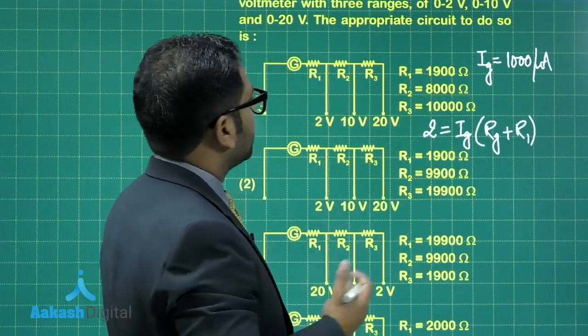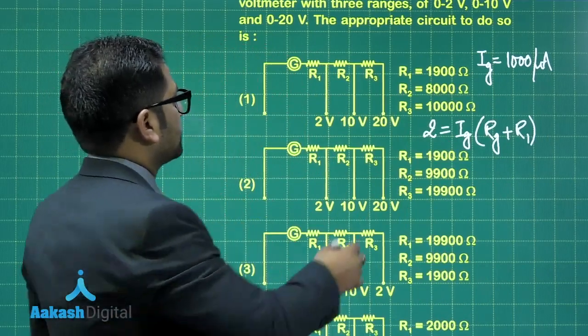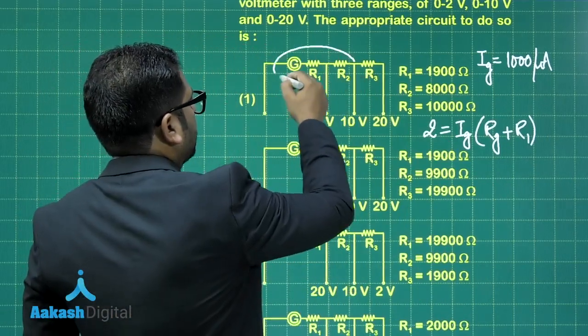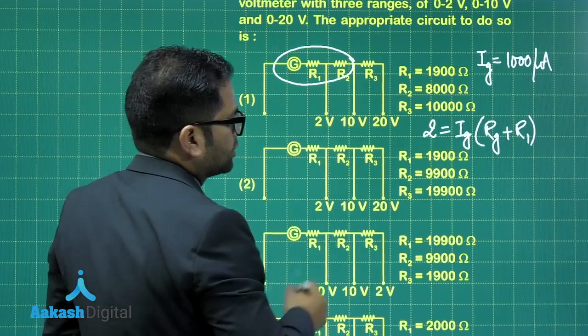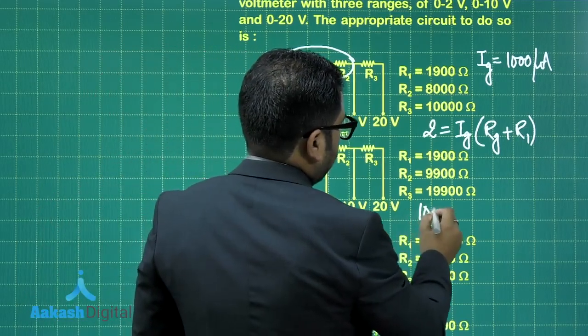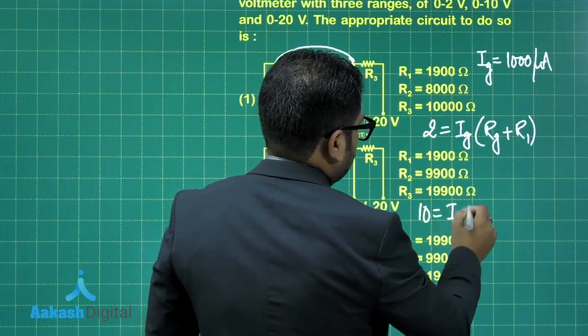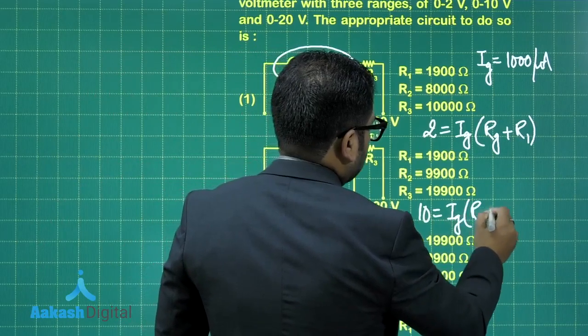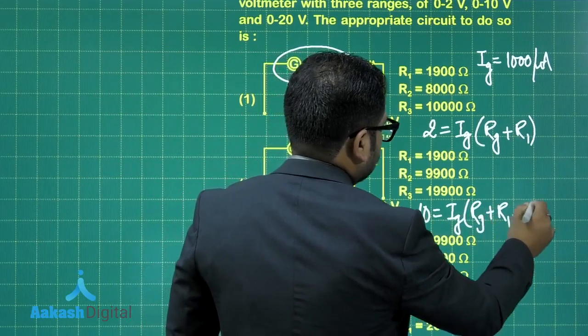Likewise, if you want to convert it into 10 volt, that means this much will be for the 10 volt. So what we can write, 10 is IG into RG plus R1 plus R2.